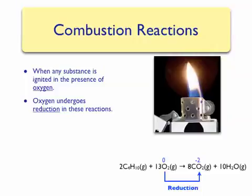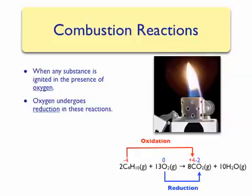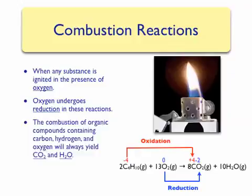It is a different process to assign oxidation numbers in combustion reactions, but we've done so here to illustrate the point. In the butane molecule, carbon has a minus four oxidation number, while in carbon dioxide it has a plus four oxidation number — therefore carbon is completely oxidized. Many times we will see combustion reactions with organic compounds containing hydrogen, carbon, and oxygen. In these cases, combustion will always form carbon dioxide and water.